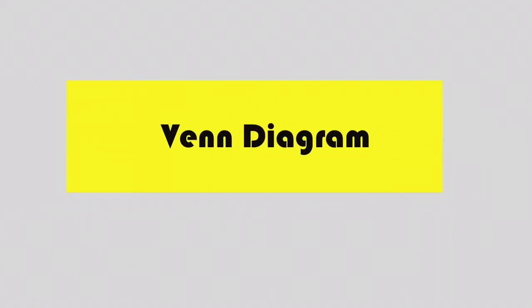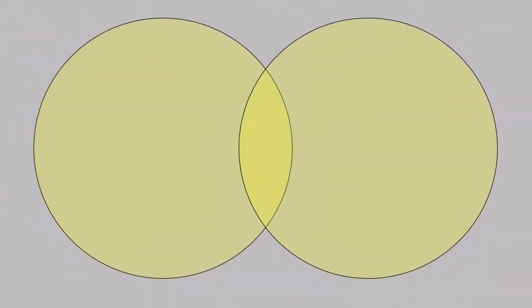Hello everyone! In this video we are studying something really cool that will help you a lot to understand your texts. It is the Venn Diagram. Basically, they are two overlapping circles where you can organize your ideas.